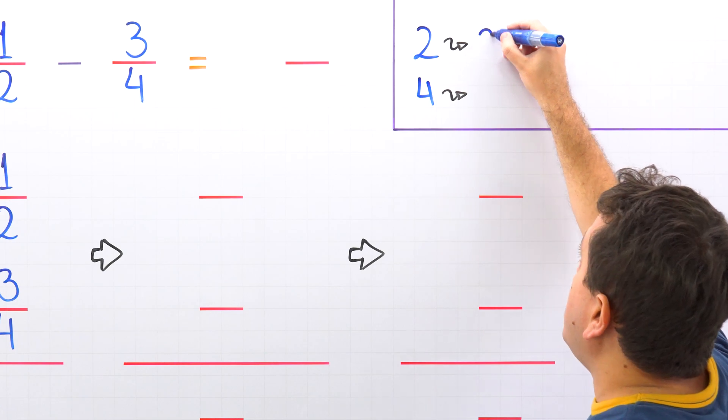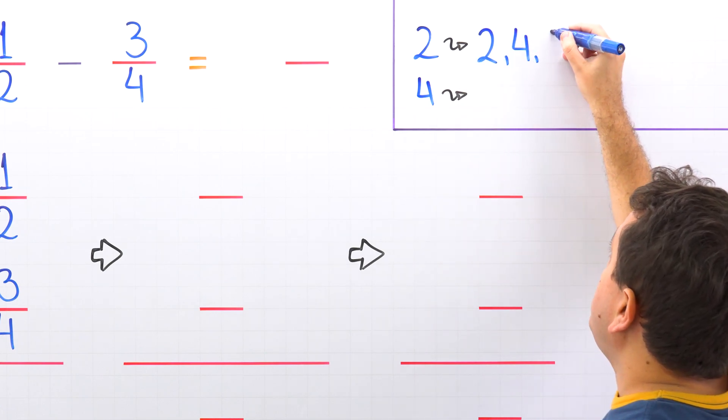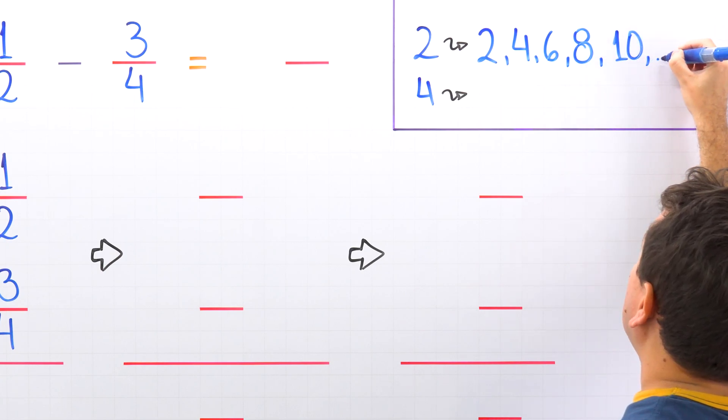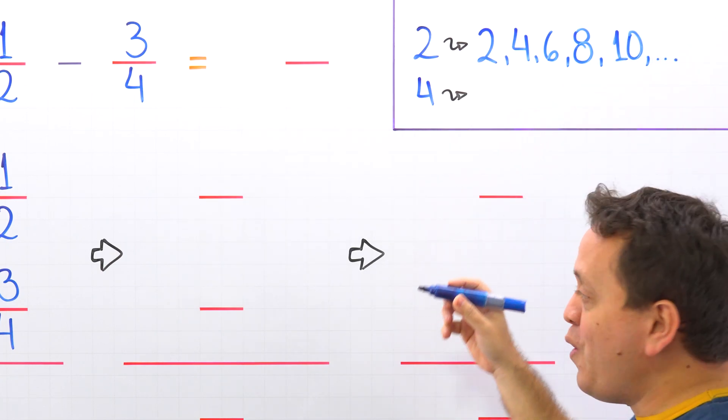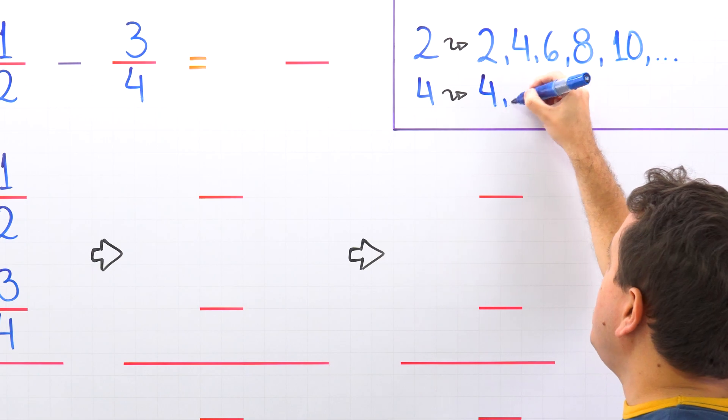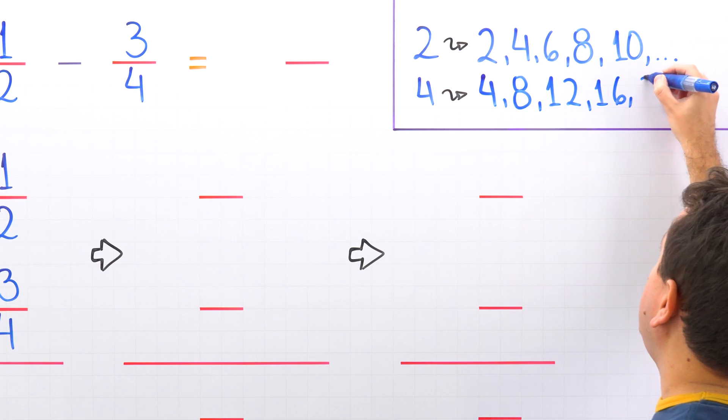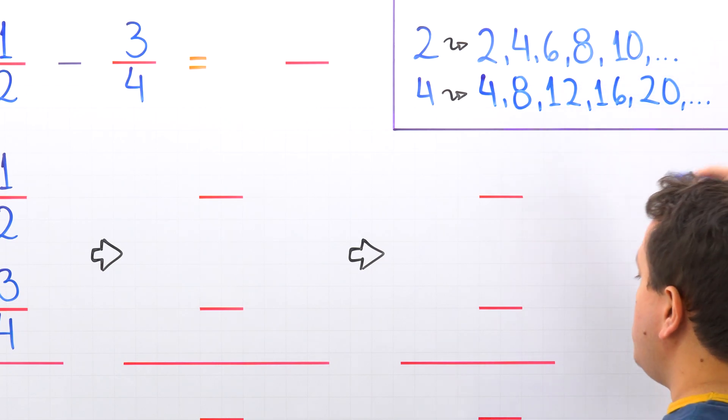The first multiples of 2 are 2, 4, 6, 8, 10, and so on. The first multiples of 4 are 4 times 1 is 4, then comes 8, then comes 12, then we have 16, 20, and so on.